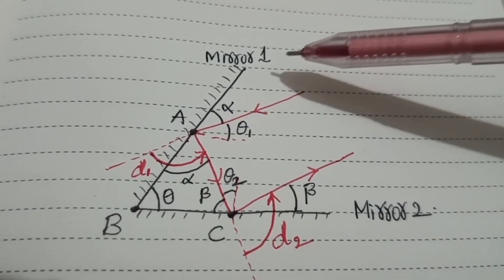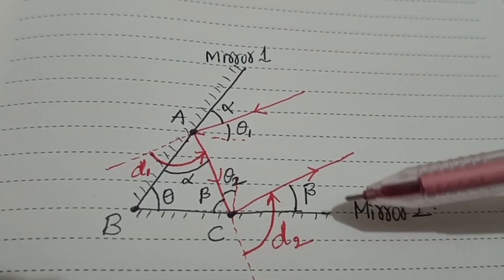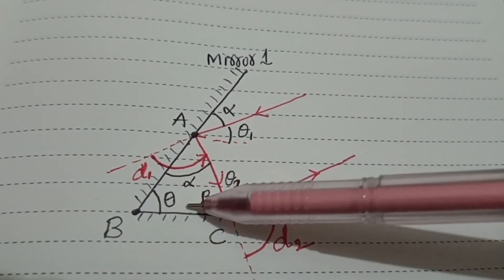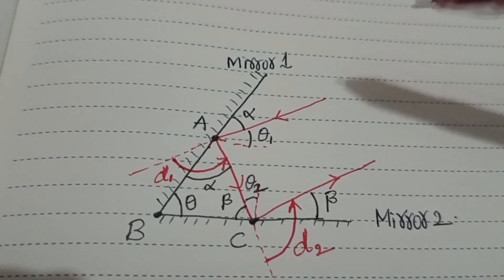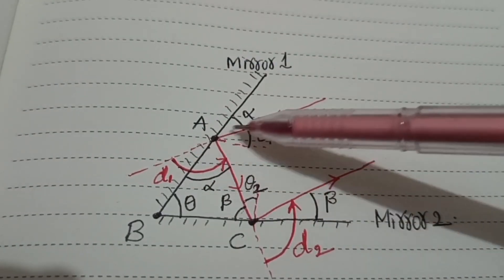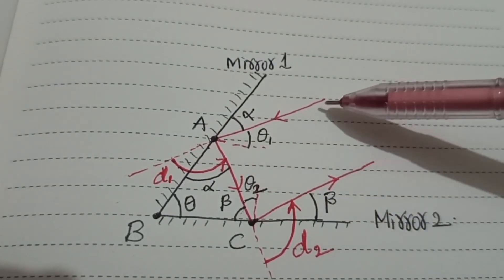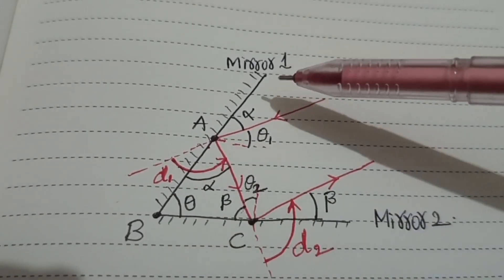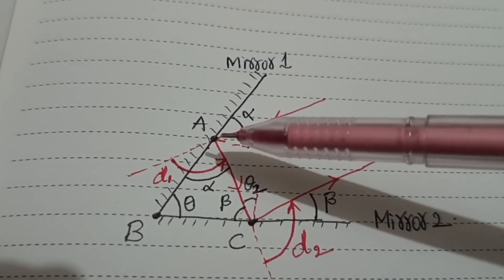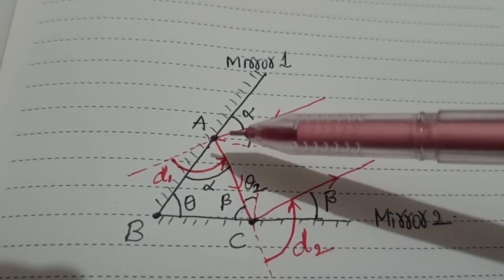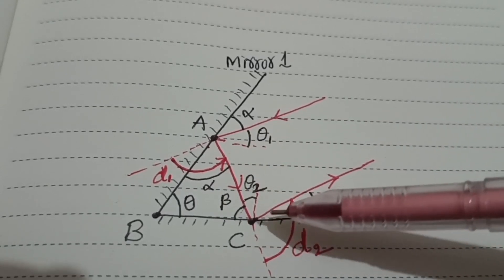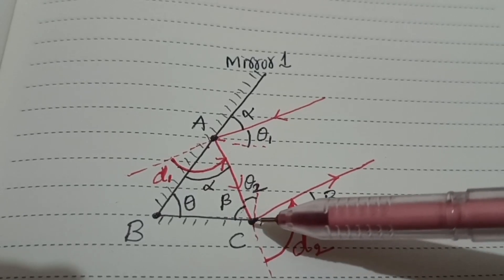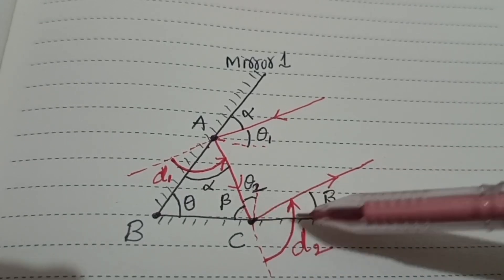This is plane mirror 1 and this is plane mirror 2. These two are arranged with some angle theta. Here I am considering an incident ray. This incident ray first strikes plane mirror 1, undergoes a reflection, and then strikes the second mirror at point C. After striking the second mirror, it continues moving.